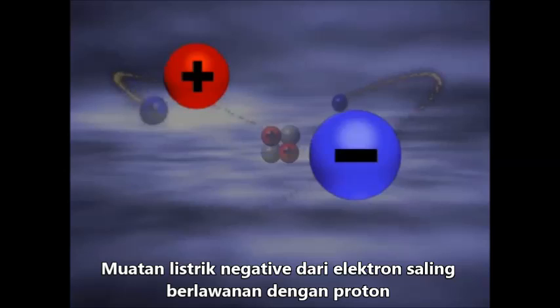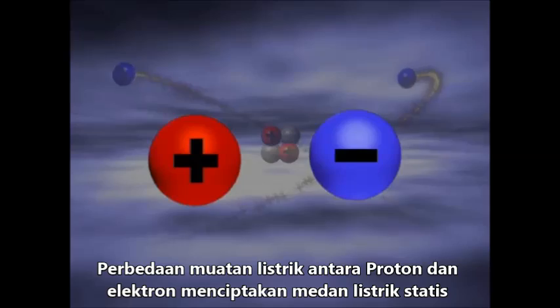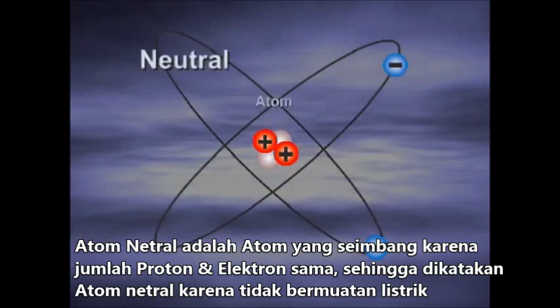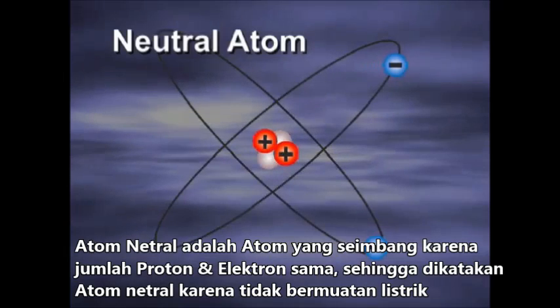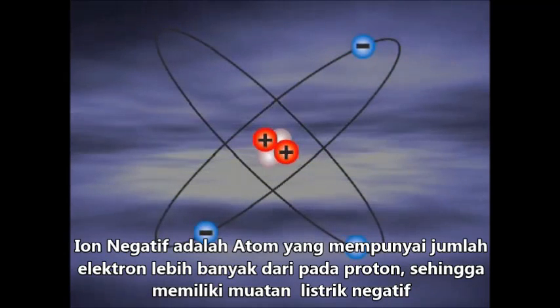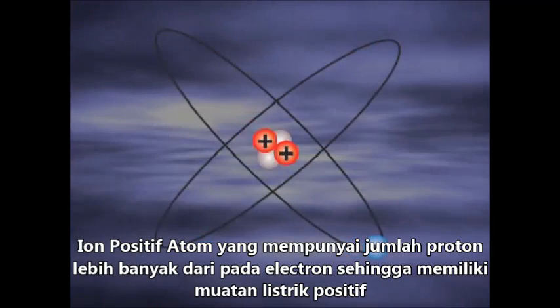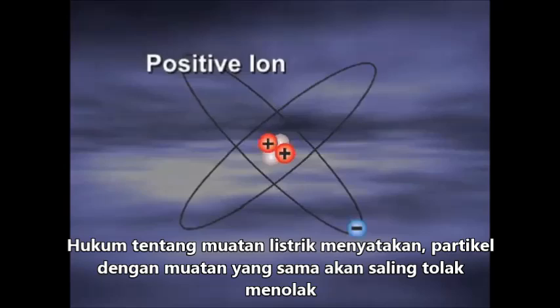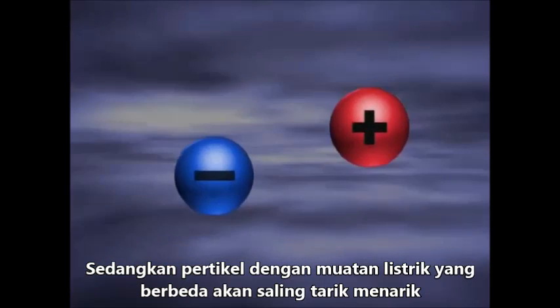The negative charge of an electron is equal but opposite to the positive charge of a proton. These opposite electrical charges create an electrostatic field. An atom is balanced when it has an equal number of protons and electrons — it has no charge, and it's said to be neutral. When an atom has more electrons than protons, it has a negative charge and is called a negative ion. An atom that has fewer electrons than protons will have a positive charge, and is known as a positive ion. The law of electrical charges states that particles with like charges repel each other, while particles with unlike charges attract each other.